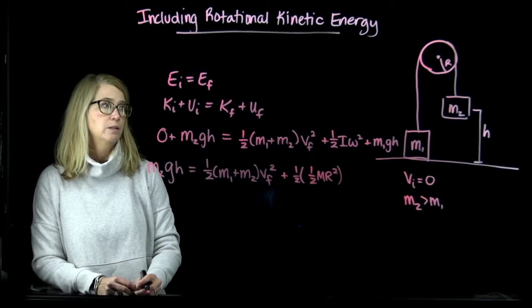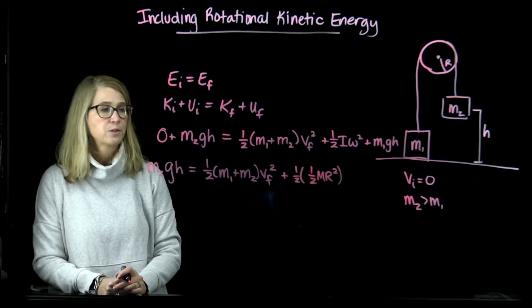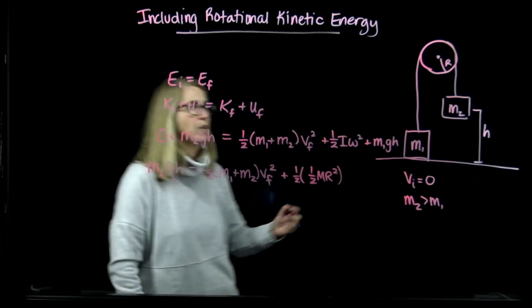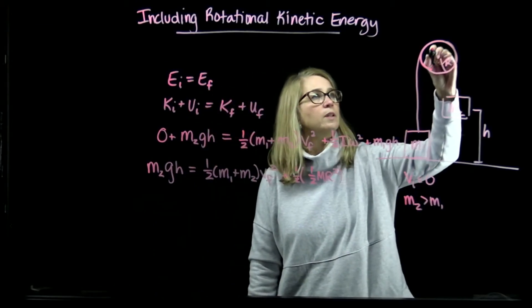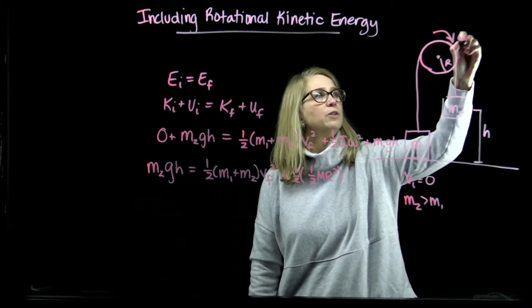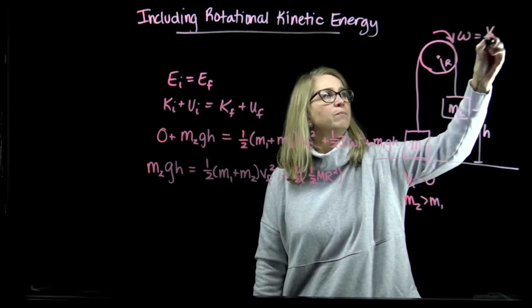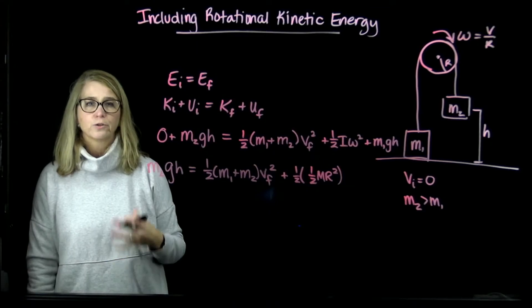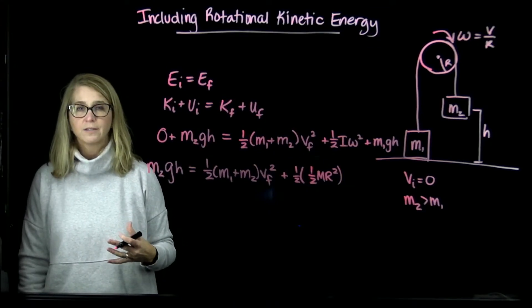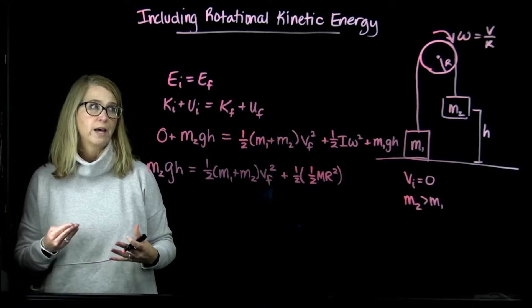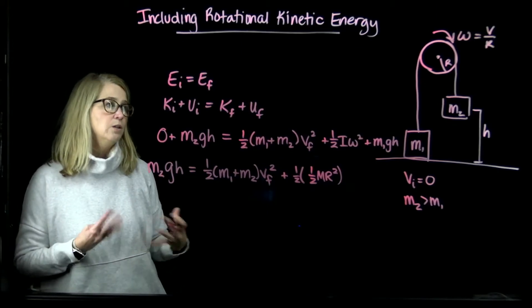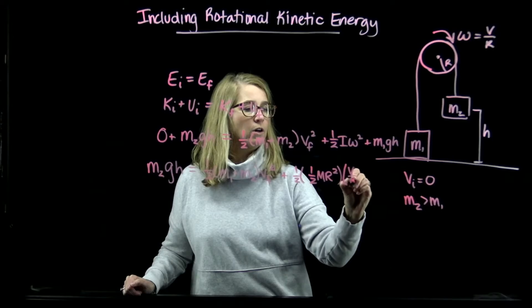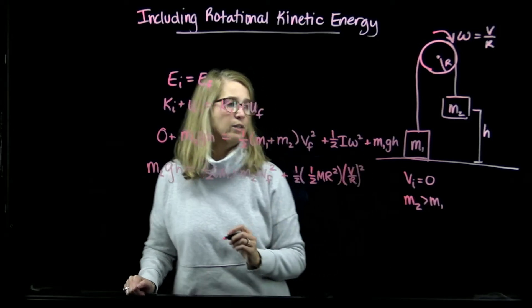Now the angular velocity of the pulley, so everything's going to rotate like this, but remember that that angular velocity is going to be related to the linear velocity of the masses through that factor of r. So we could actually put in here v over r, and that's squared.